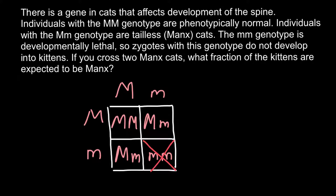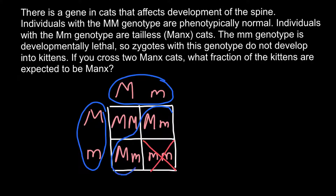As you can see, two out of three live births would also be Manx cats. So our answer is two-thirds, or if you need the answer in percentage form, the answer would be 66.6%.